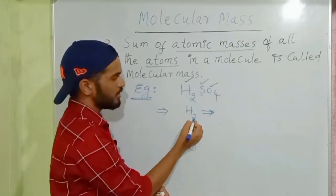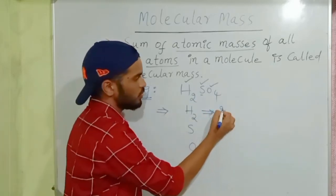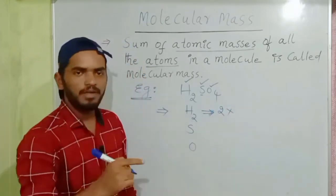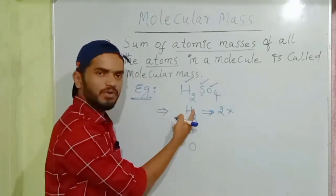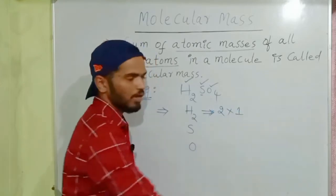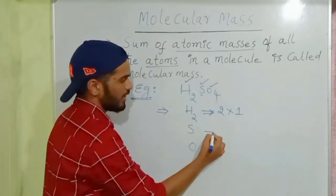Take hydrogen. How many hydrogen atoms are there? Two atoms. So two into - we have to multiply the atomic masses of respective elements. Hydrogen atomic mass is one, so we consider two into one.